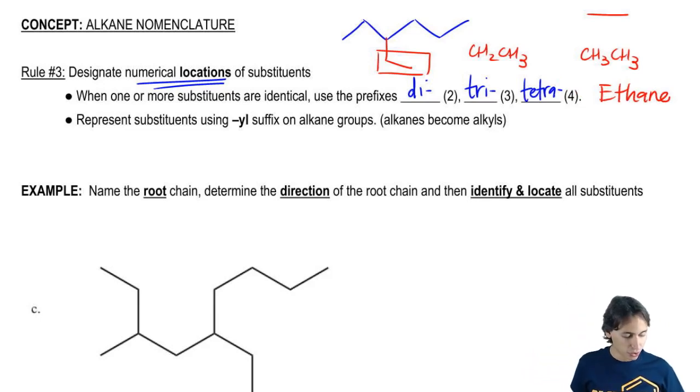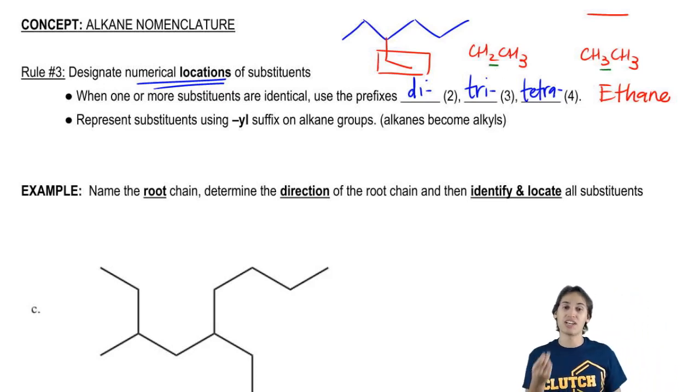But notice how the molecular formula is slightly different here. I have a three, but when it's a substituent or a branch, it has a two. So this is not – you can't just call it ethane.